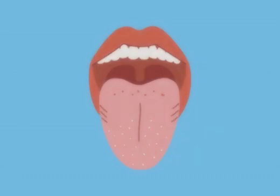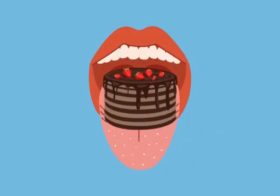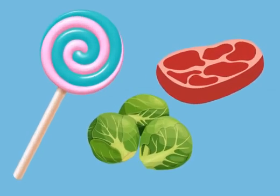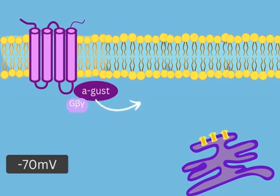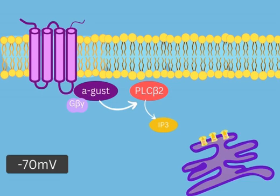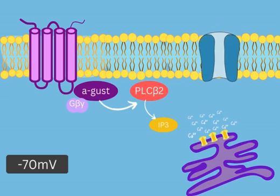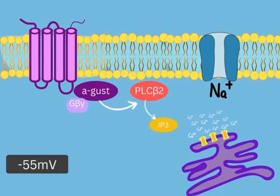Calcium also plays a role in your ability to taste your favorite flavor of cake. The taste modalities of sweet, bitter, and umami activate the G-protein alpha-gustducin, which causes an increase in the activity of the enzyme phospholipase C-beta-2. This activates the second messengers diacylglycerol and inositol triphosphate, or IP3. IP3 causes an increase in the release of calcium into the cytoplasm, resulting in the opening of TRPM5 receptors. This results in membrane depolarization and the firing of action potentials, allowing you to experience taste.